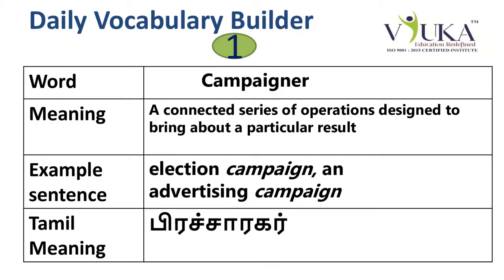Word 1: Campaigner, which means a connected series of operations designed to bring about a particular result. Example sentence: Election campaign, an advertising campaign.